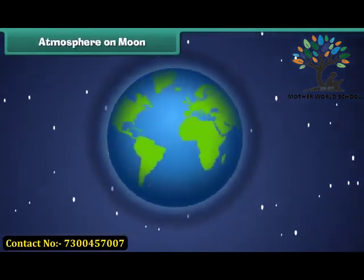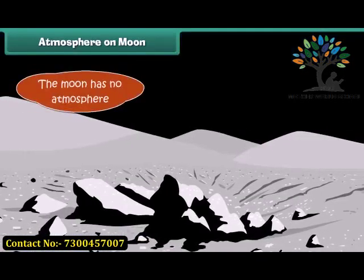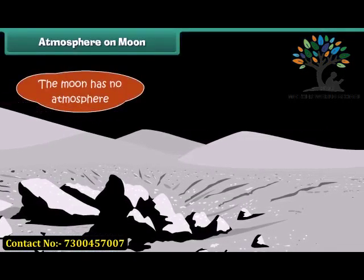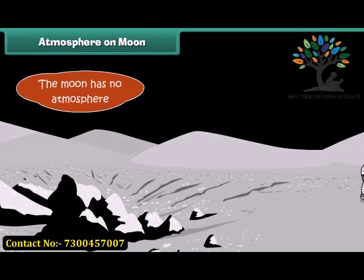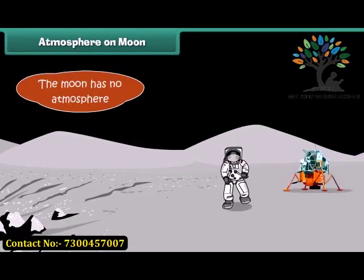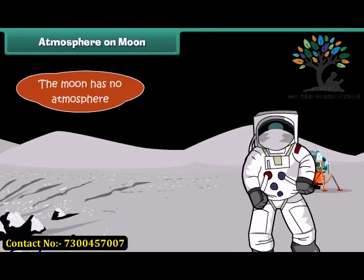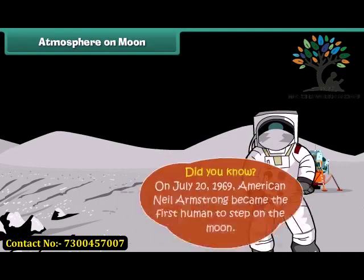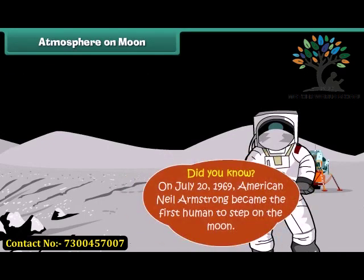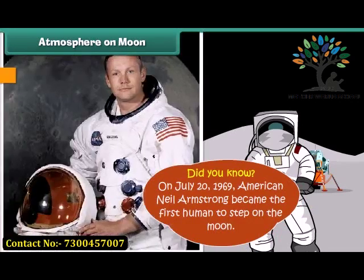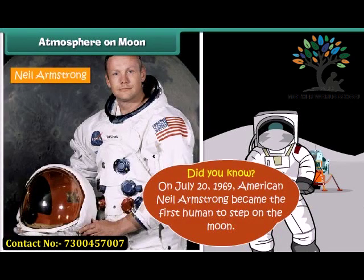Unlike Earth, the moon has no atmosphere, due to which the sky always appears dark even on the bright side. Also, there can be no sound transmission on the moon, since sound waves travel through air and the moon has no air. On July 20, 1969, American astronaut Neil Armstrong became the first human to step on the moon.